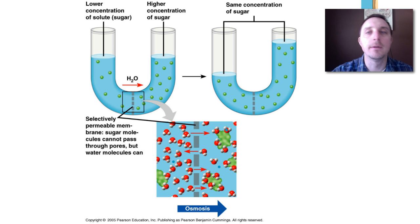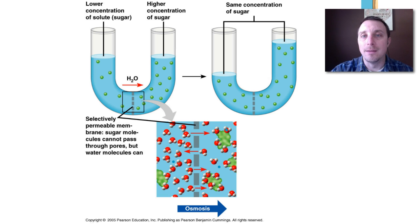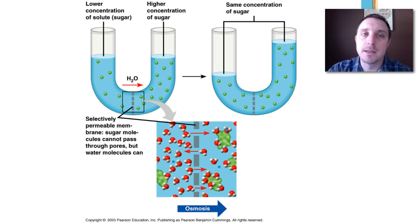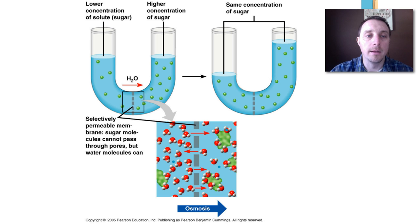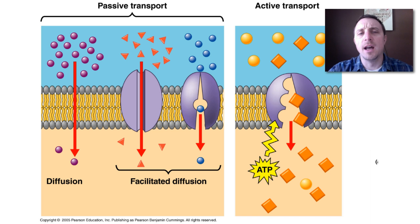People tend to get somewhat confused about what osmosis is. It's very simply the diffusion of water across a membrane. Diffusion always goes from an area of high concentration to an area of low concentration. So in this case, on the initial setup on the left side of the tube we have a high concentration of water, and on the right side we have a lower concentration of water, so water is going to move from the left to the right.